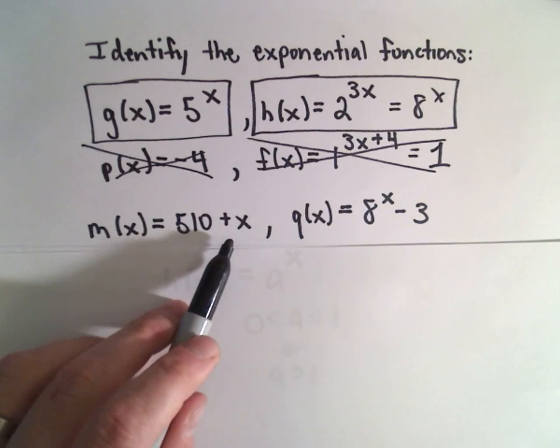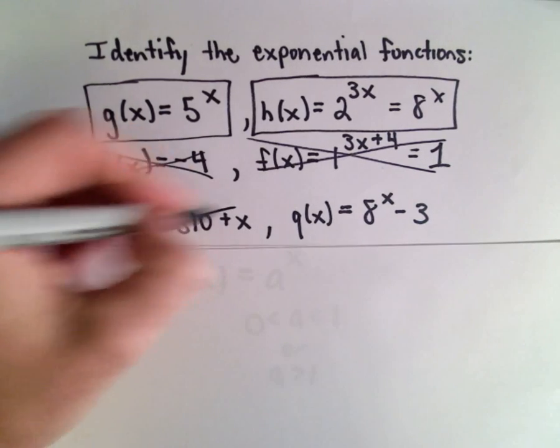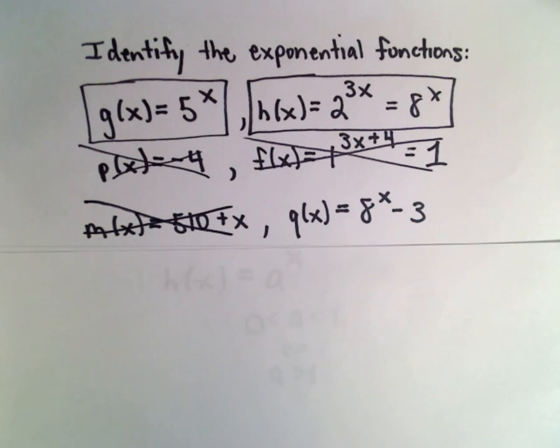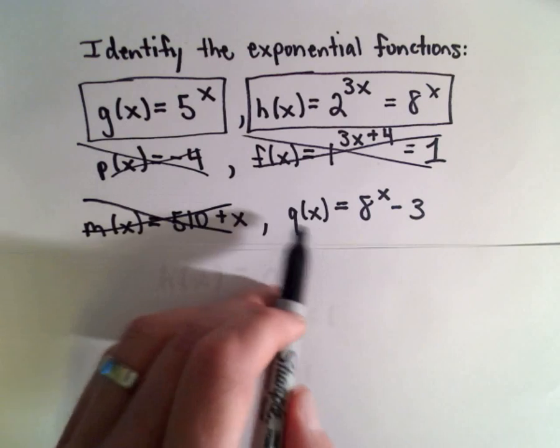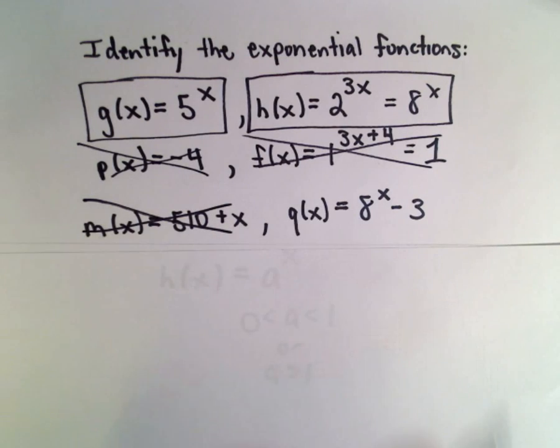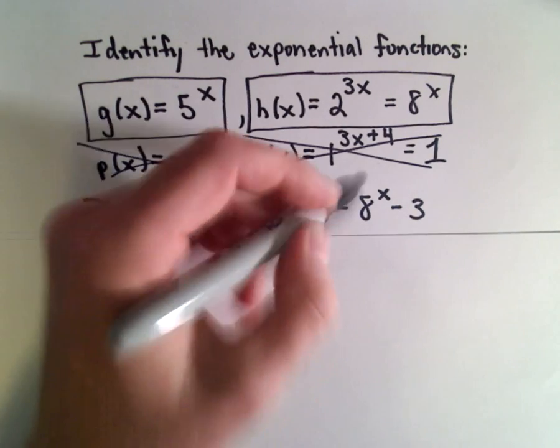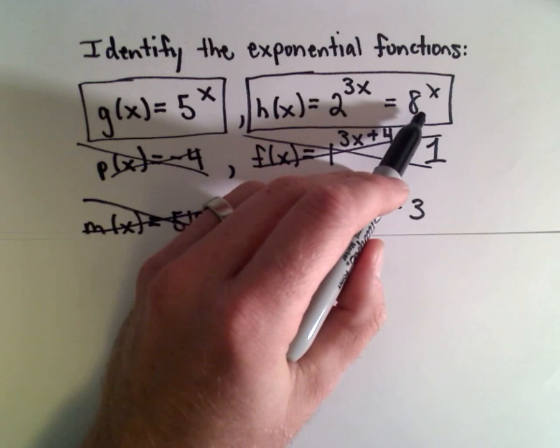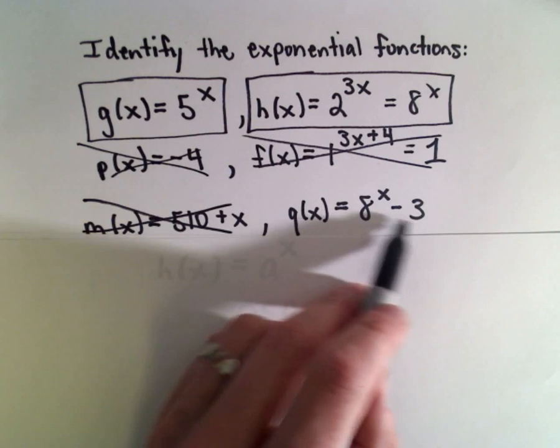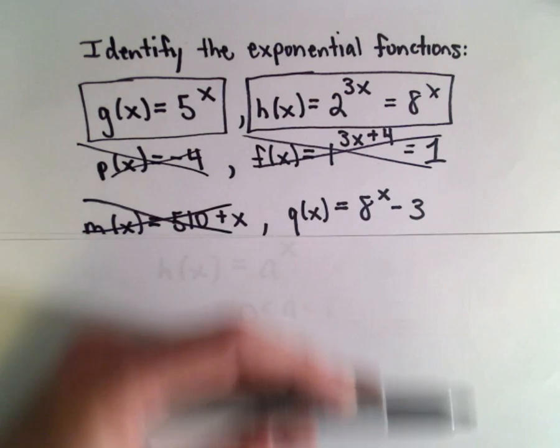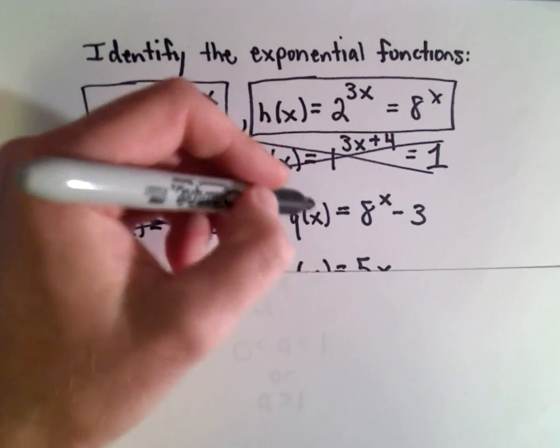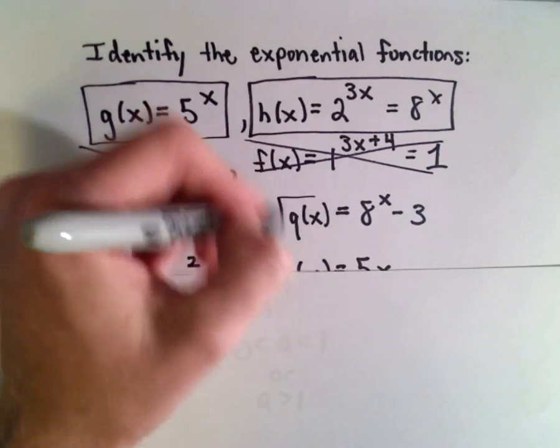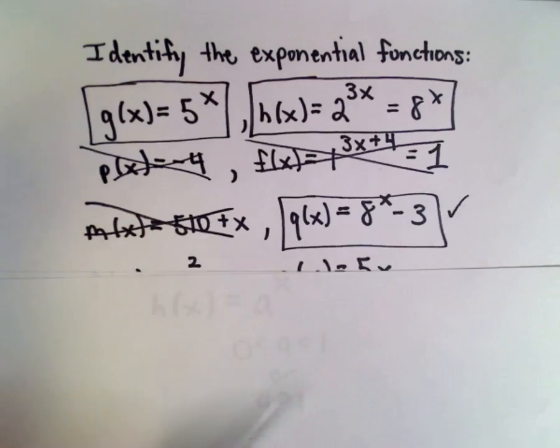m(x) equals 510 plus x. That's a linear function. That doesn't work. q(x) equals 8^x minus 3. Well again, 8 to the power of x, we said that's exponential. The minus 3 is just going to shift our function down. So 8^x minus 3, that also looks like an exponential function to me.